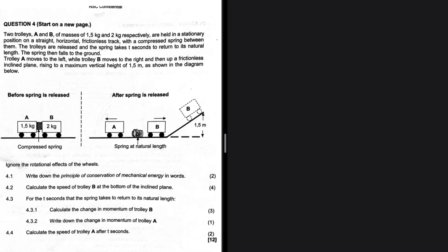Write down the principle of conservation of mechanical energy in words — that is 4.1. Usually in 4.1 I'm defining the principle of conservation of mechanical energy, and I'm assuming that in 4.2 I'm going to have to use that principle. Usually it is the principle of conservation of linear momentum, but here we have the conservation of mechanical energy, so I'm expecting that's what we'll use in 4.2. Let's go ahead and see if that is actually the case.